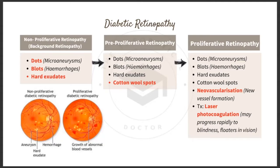As you progress to pre-proliferative retinopathy, cotton wool spots are added to the dots, blots, and hard exudates. In proliferative retinopathy, all previous findings are present plus neovascularization — new vessel formation. Once neovascularization is seen, the treatment required is laser photocoagulation.